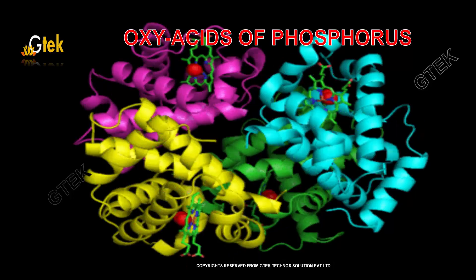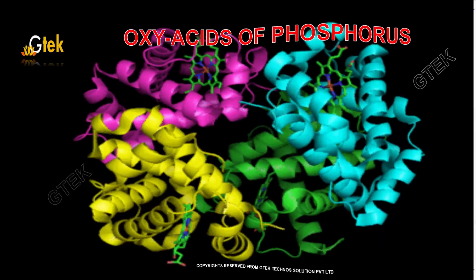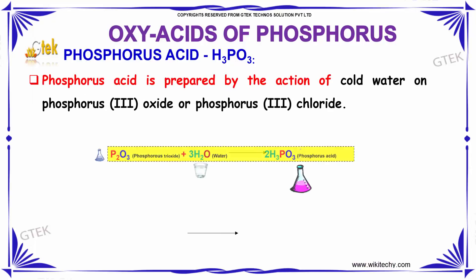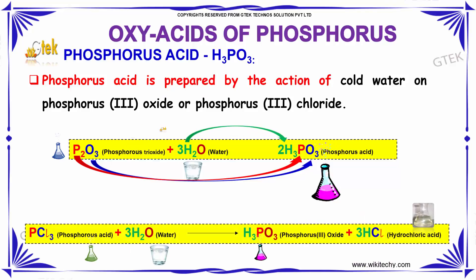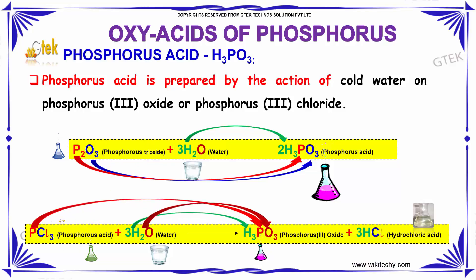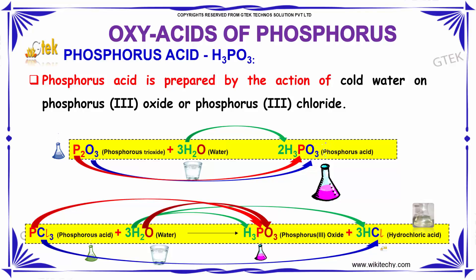Oxy Acids of Phosphorus. Phosphorous Acid (H₃PO₃) is prepared by the action of cold water on Phosphorus Trioxide or Phosphorus Trichloride. Phosphorus Trichloride reacts with water to produce Phosphorous Acid and HCl.